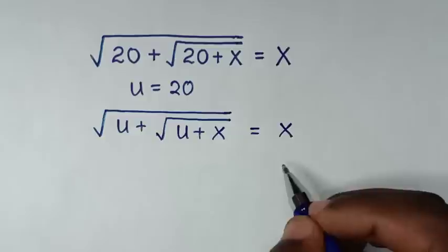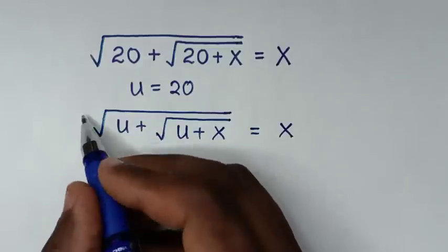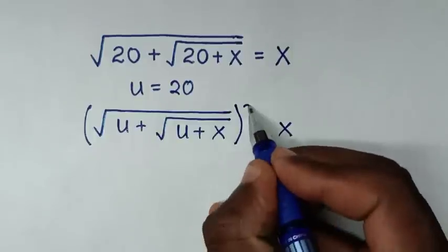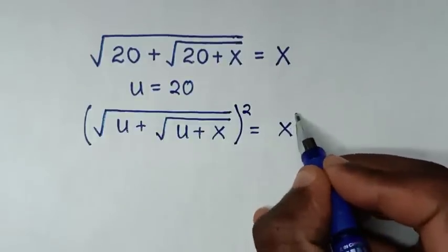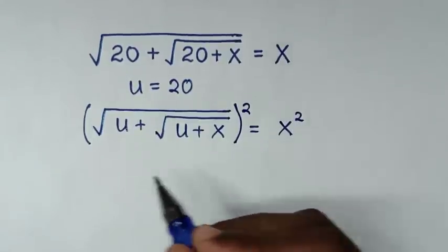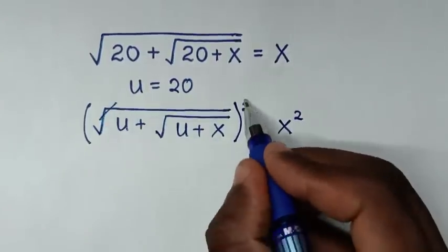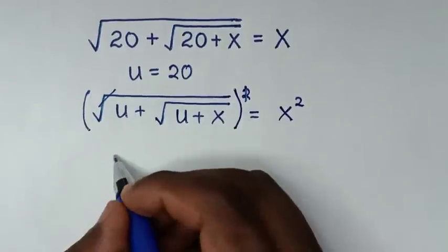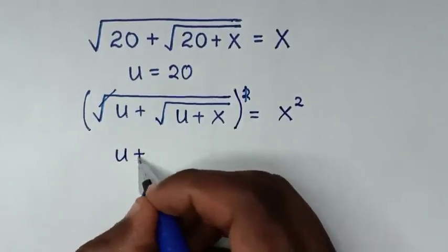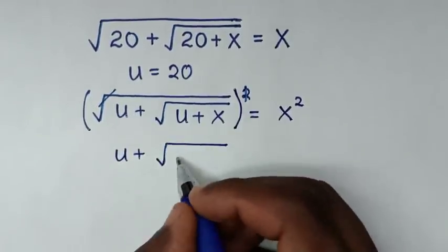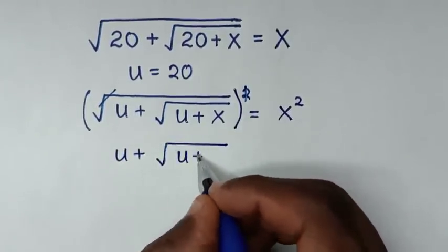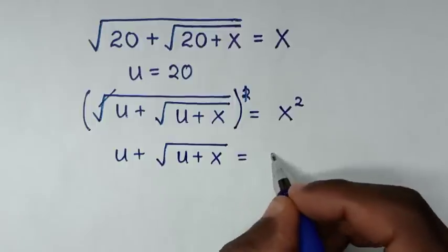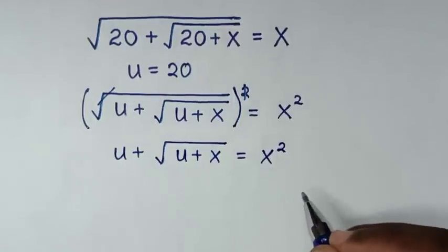To remove this outer square root, we square both sides. This square root will cancel with this square, giving us: u plus square root of u plus x, is equal to x squared.